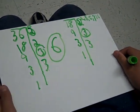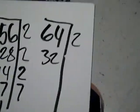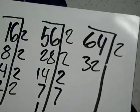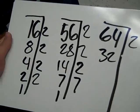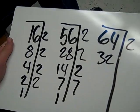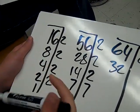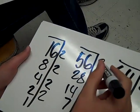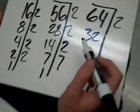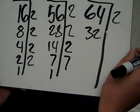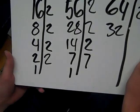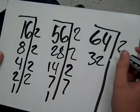And then you just multiply them. 2 times 3 is 6. On the first one, 16 divided by 2 equals 8. 8 divided by 2 equals 4. And 4 divided by 2 equals 2. 2 divided by 2 equals 1. And then 56 divided by 2 equals 28. 28 divided by 2 equals 14. 14 divided by 2 equals 7. 7 divided by 7 equals 1.